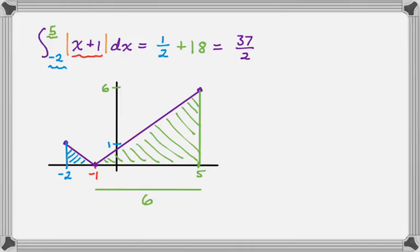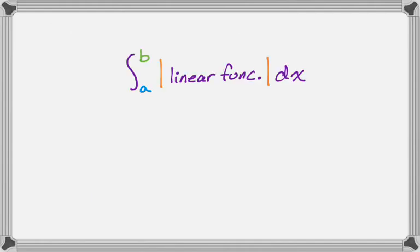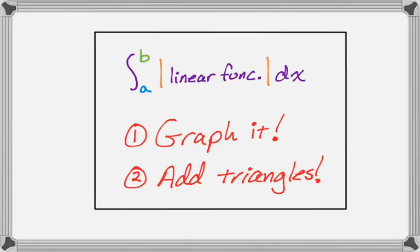Didn't have to deal with piecewise functions. This is definitely the easiest way to deal with these sorts of problems. Definitely recommend it. So to kind of summarize, if you find yourself doing the definite integral of the absolute value of a linear function, what you should definitely do is graph it, and then just add up some triangles. So that's how I think you should deal with these. I hope you found this helpful. And good luck.